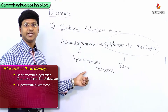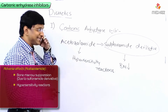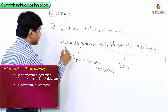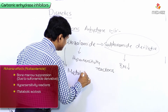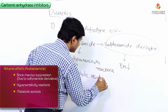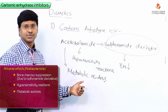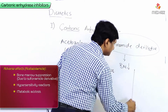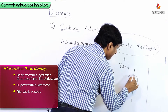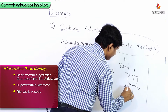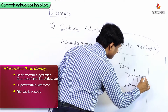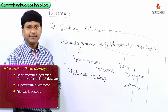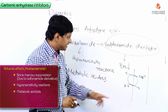Apart from bone marrow suppression and hypersensitivity reactions, there are certain other adverse effects associated with acetazolamide. One of them is metabolic acidosis. Metabolic acidosis occurs because acetazolamide will inhibit the sodium-proton channel.